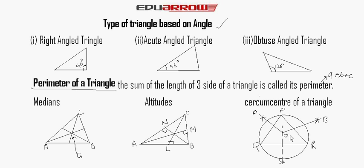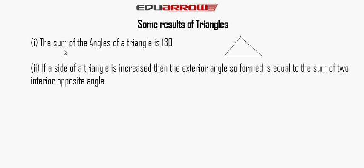The sum of the angles of a triangle is always 180 degrees. Let's take a triangle A, B, C. Angle A, Angle B, and Angle C — the sum of these angles is equal to 180 degrees.